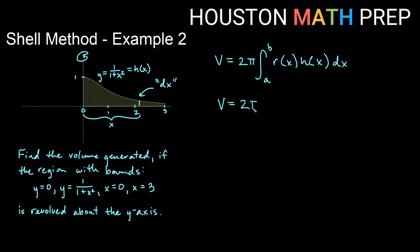So we'll get 2π out front as part of the formula. My r of x is x, and my h of x is 1 over 1 plus x squared, dx. Integrating dx, we need x bounds. Here is the farthest left, and here is the farthest right. We're going from 0 to 3 in the x direction.